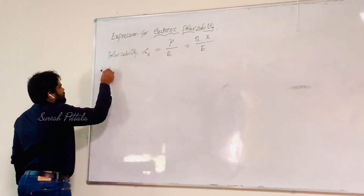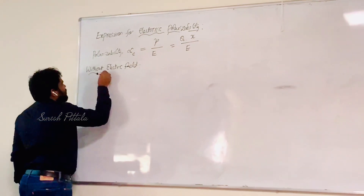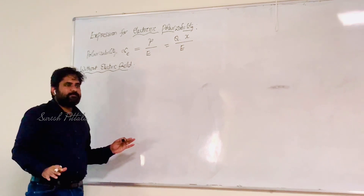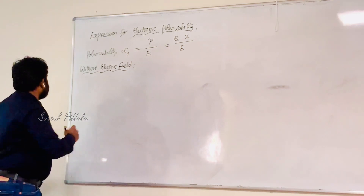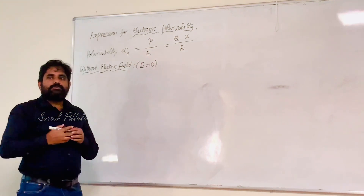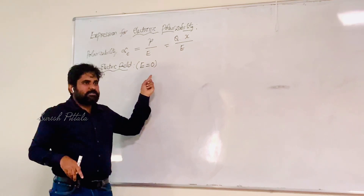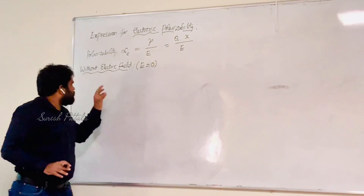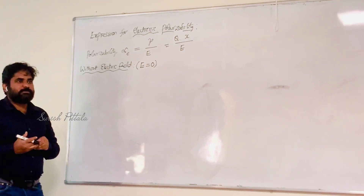First, let us consider the case without an electric field — that is, E = 0. We always discuss two things: what is your polarization P when E = 0, and what is P when E ≠ 0. In the absence of the electric field, the polarization P is zero.